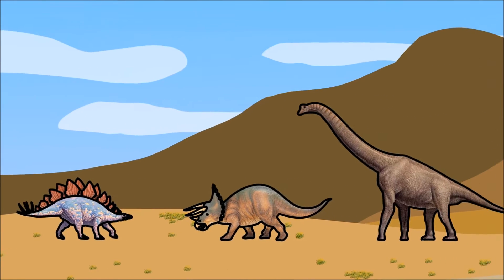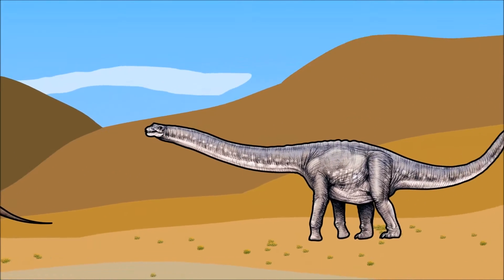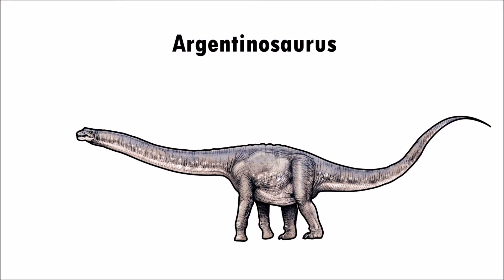Dinosaurs were all sorts of shapes and sizes. One of the largest dinosaurs ever to have walked this planet is called Argentinosaurus. This dinosaur was about 26 feet tall and around 121 feet long.